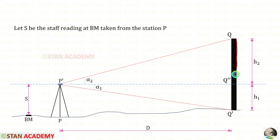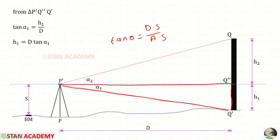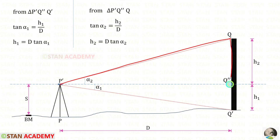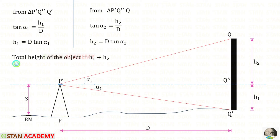First, we are going to find the total height of the tower. Taking the lower triangle and applying the tan formula — tan alpha 1 equals h1 upon d — so h1 equals d tan alpha 1. For the upper triangle, tan alpha 2 equals h2 upon d, so h2 equals d tan alpha 2. To get the total height of the tower, we add h2 and h1.